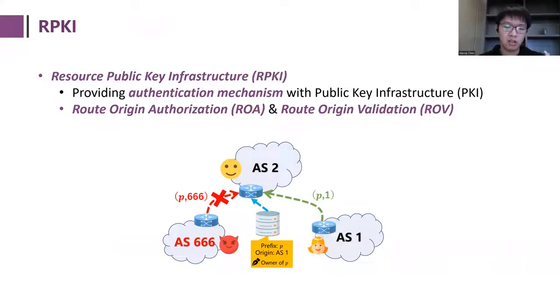One solution to eliminate or reduce the chance of prefix hijacking is RPKI, which provides BGP with the authentication mechanism to check the validity of the origin AS in the route. The simplified working process of RPKI can be described as follows. First, the owner of a prefix P can register its prefix in RPKI repository, generating a record that authorizes an AS to originate prefix P. Then if other ASes receive routes containing prefix P, they can refer to the RPKI repository to check the validity of the routes and drop the invalid ones.